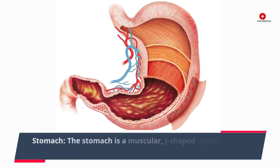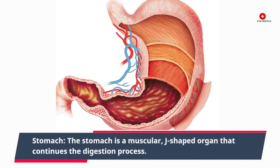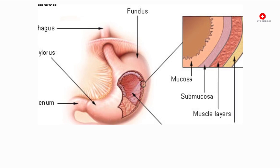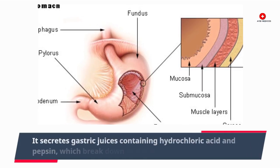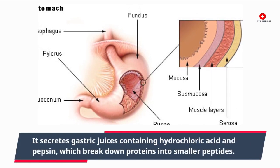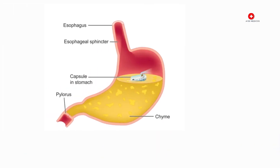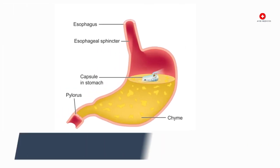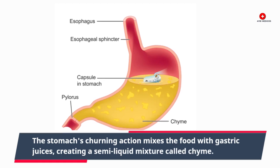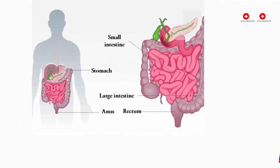Stomach. The stomach is a muscular, J-shaped organ that continues the digestion process. It secretes gastric juices containing hydrochloric acid and pepsin, which break down proteins into smaller peptides. The stomach's churning action mixes the food with gastric juices, creating a semi-liquid mixture called chyme.